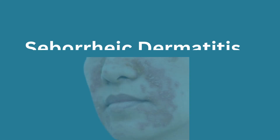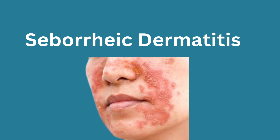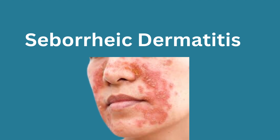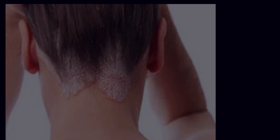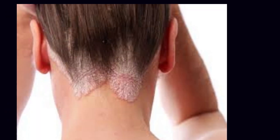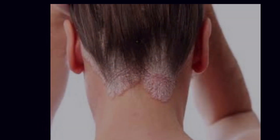5. Seborrheic dermatitis. Seborrheic dermatitis is a skin condition that makes the skin scaly and red, and causes stubborn dandruff. It often affects the scalp, face, and sometimes other areas like the chest or armpits. People with HIV often experience it.